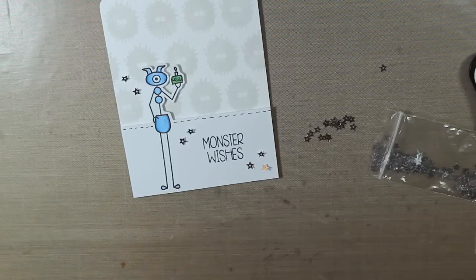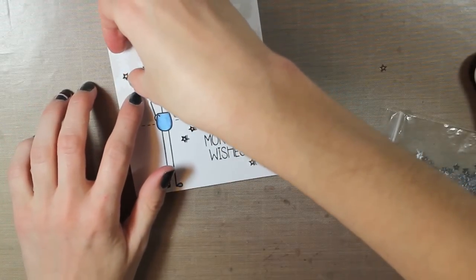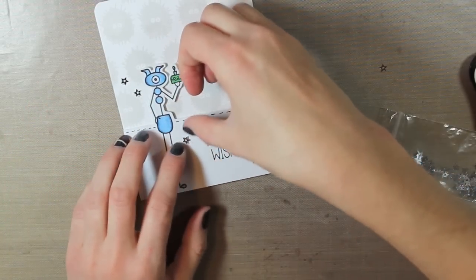So I'm adhering these down with my multi-mat medium. I just like to put a dot of the adhesive down and then I push the star sequin into place.